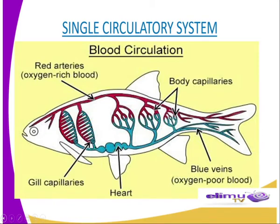In such a circulation, the heart has only two chambers — one atrium and a ventricle — as you can see from our diagram representation. For example, in fish, blood from the body tissues flows into the atrium (in plural, the atrium is known as the atria), then into the ventricle. The ventricle then pumps the blood to the capillaries of the gills and onto the body tissues and back to the heart.